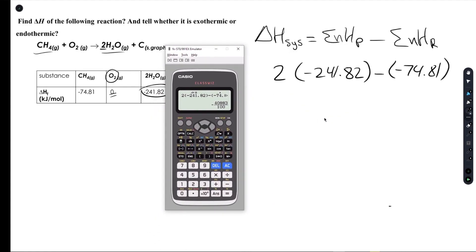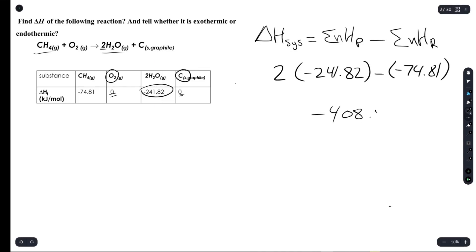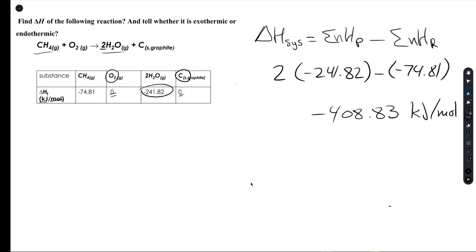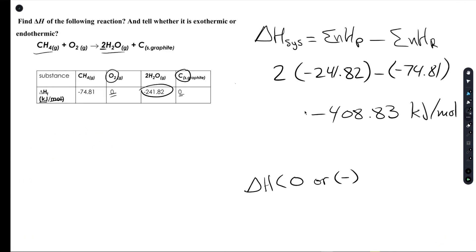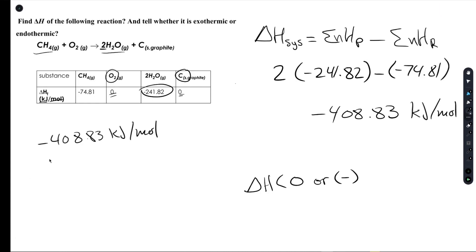Putting that into our calculators, we get the answer negative 408.83 kilojoules per mole. Looking back at what we said earlier, we know that the delta H value of an exothermic reaction will always be less than zero, or negative. Since our result is negative 408.83 kJ/mol, we can conclude that this reaction is exothermic.